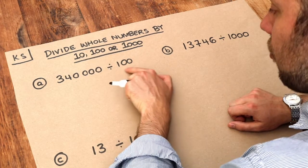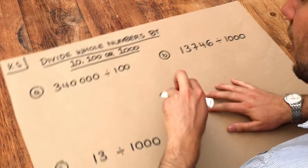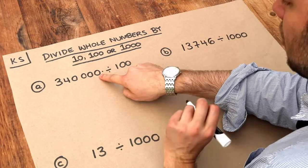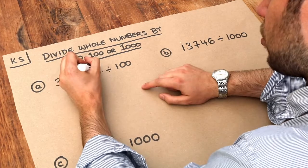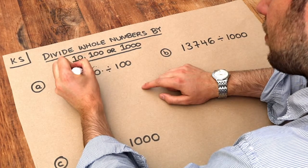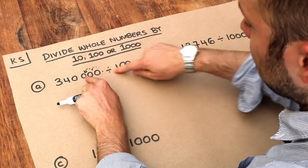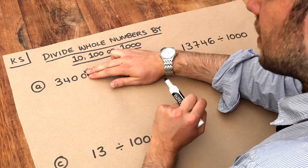So here, if we divide by 100, we've got two zeros there, so the decimal point, which goes just after the units digit, is going to move two places to the left. Now the decimal point is here, and because there are just zeros after it, we can discard that.